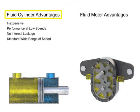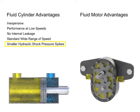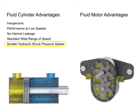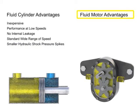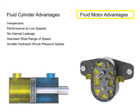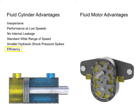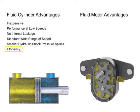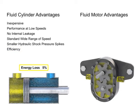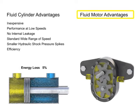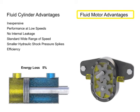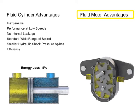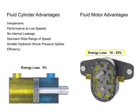Cylinders also produce smaller pressure spikes, called hydraulic shock, when stopped suddenly. Fluid motors tend to produce a much larger amount of hydraulic shock if stopped suddenly, due to the momentum energy contained in their rapidly rotating loads. Finally, cylinders are much more efficient than the typical fluid motor. Energy loss can be held to about 5% in a well-constructed cylinder, but fluid motors experience power losses from fluid leakage and friction within the device. These losses can be anywhere from 10 to 25% of the input power.